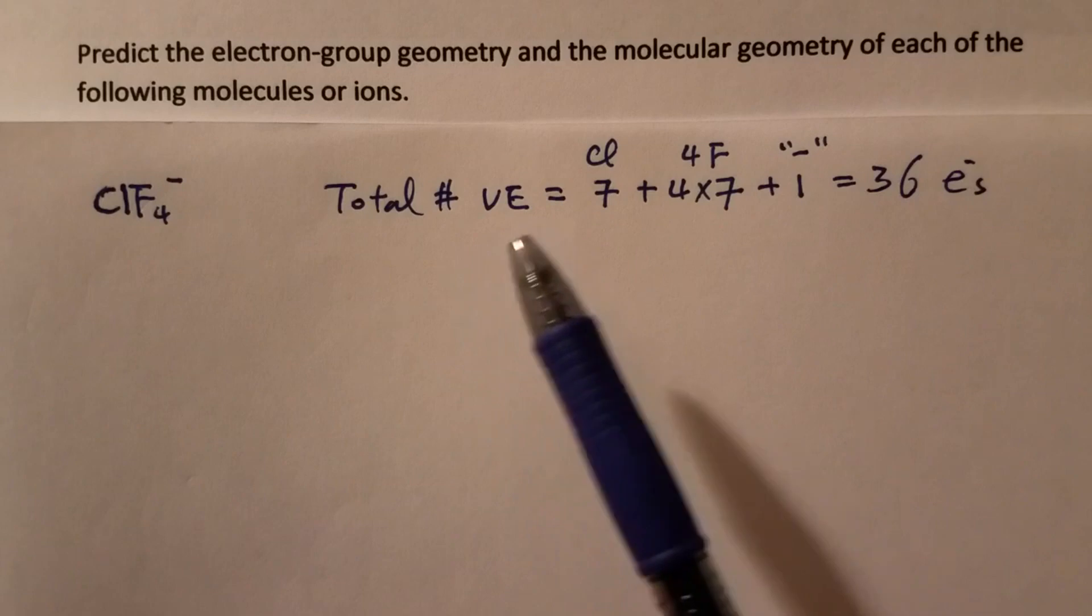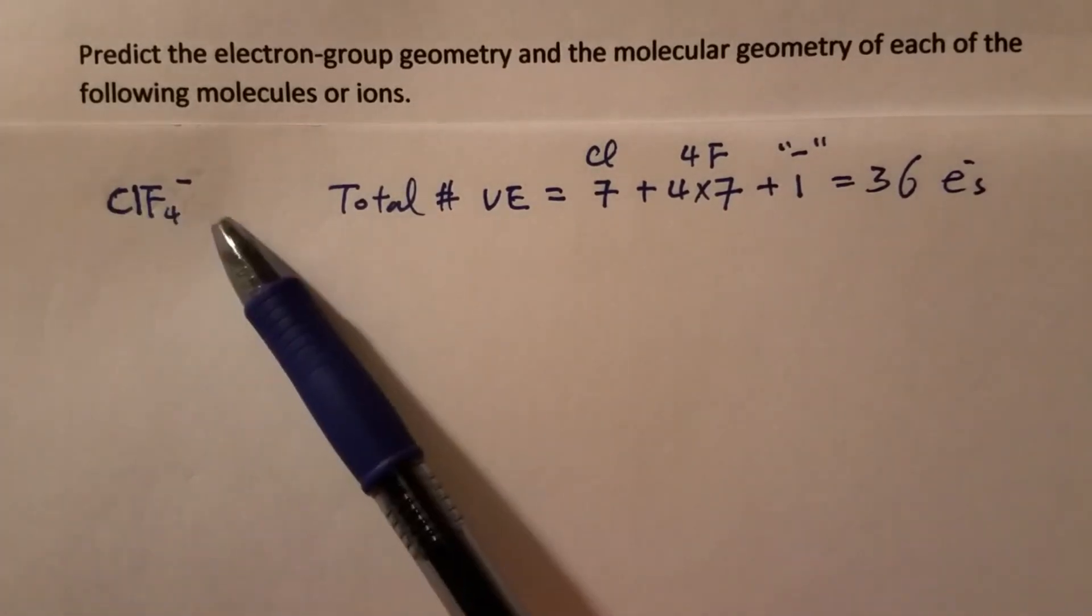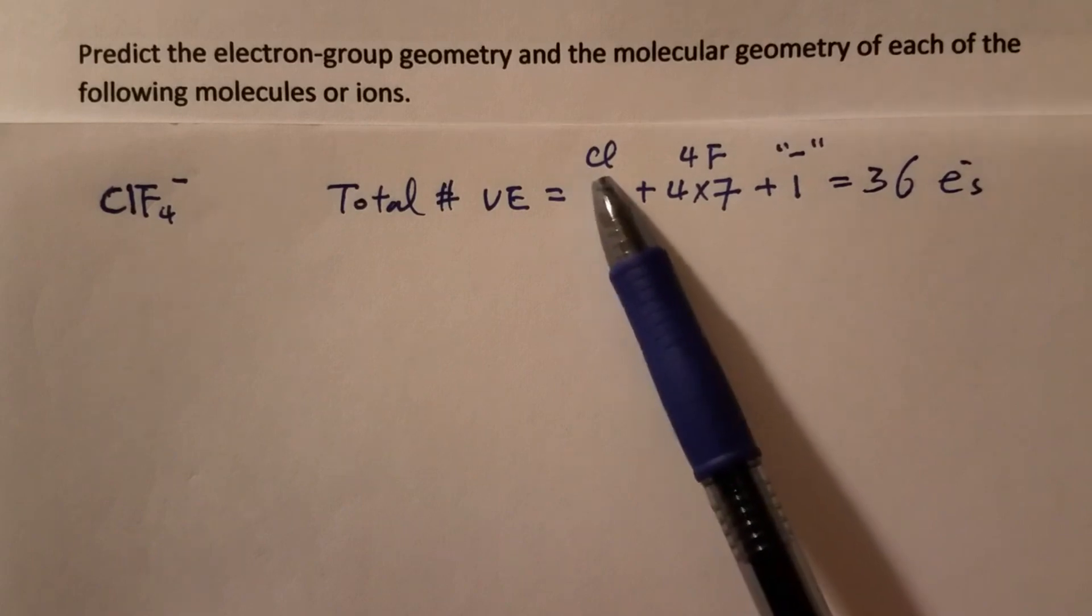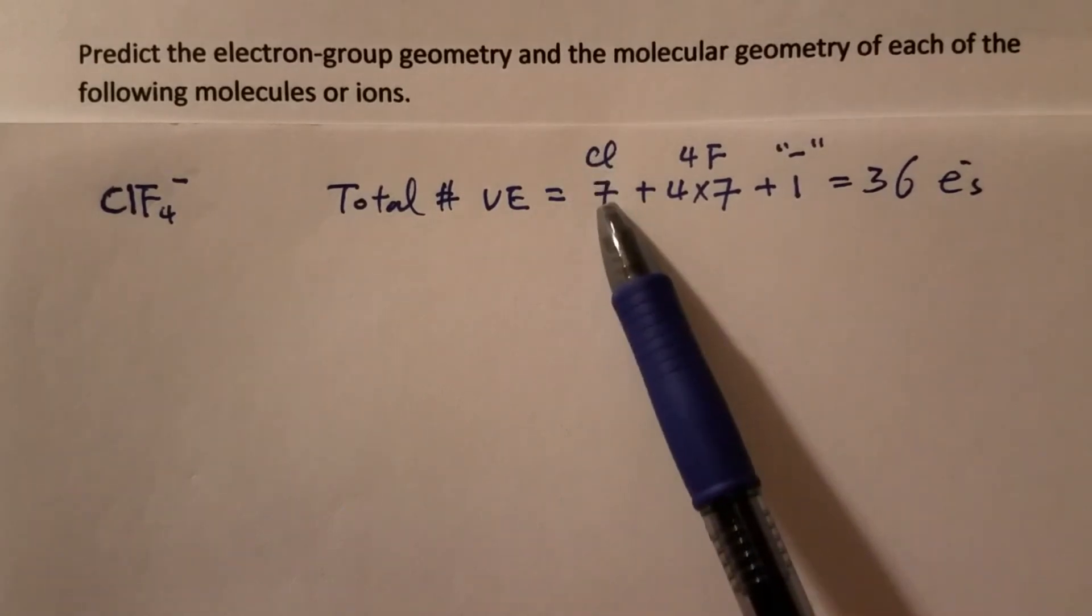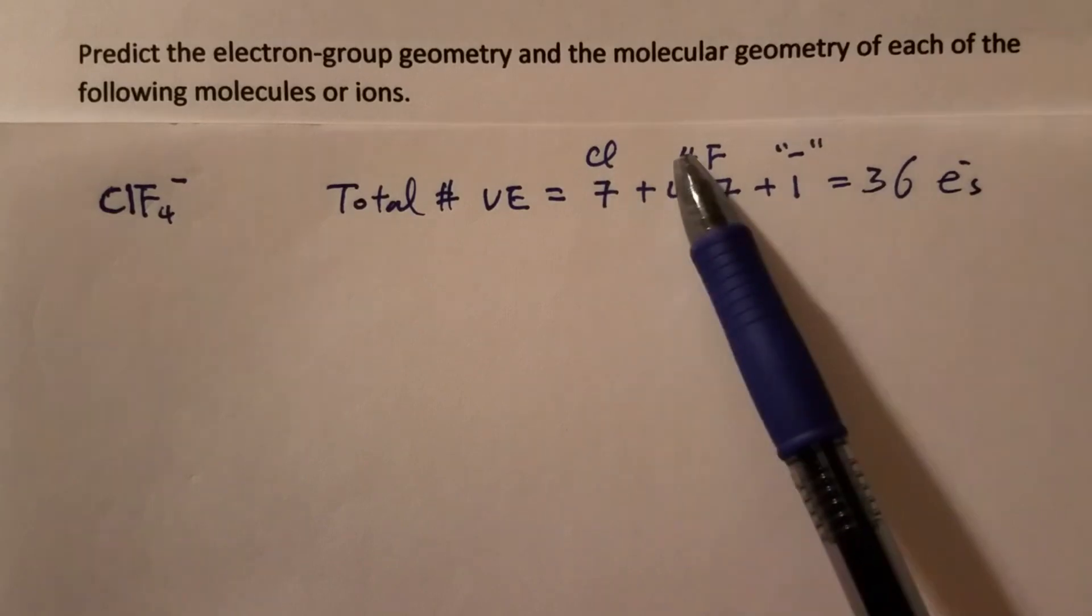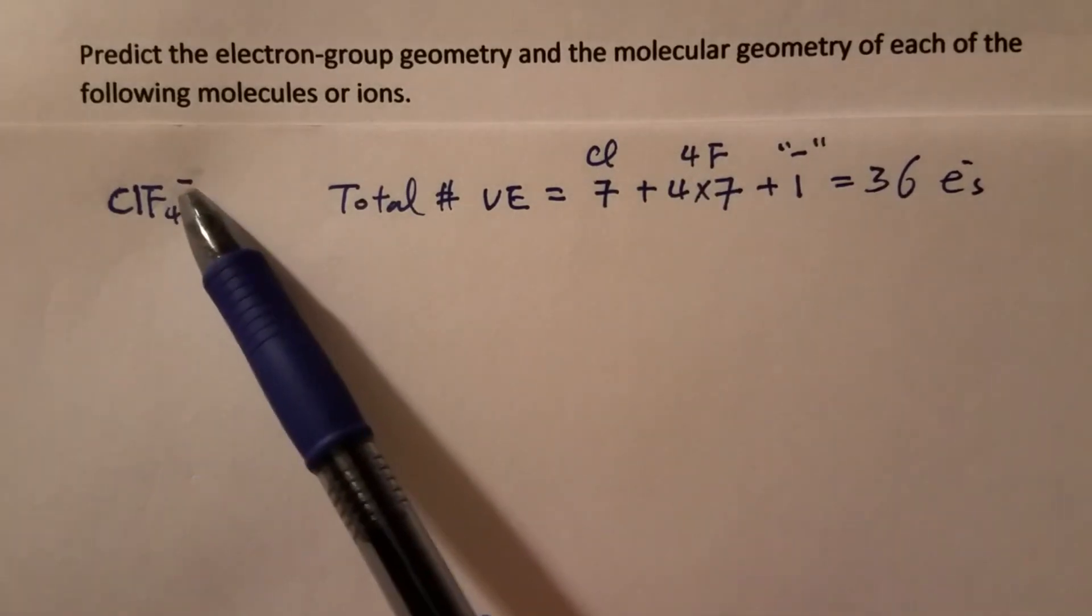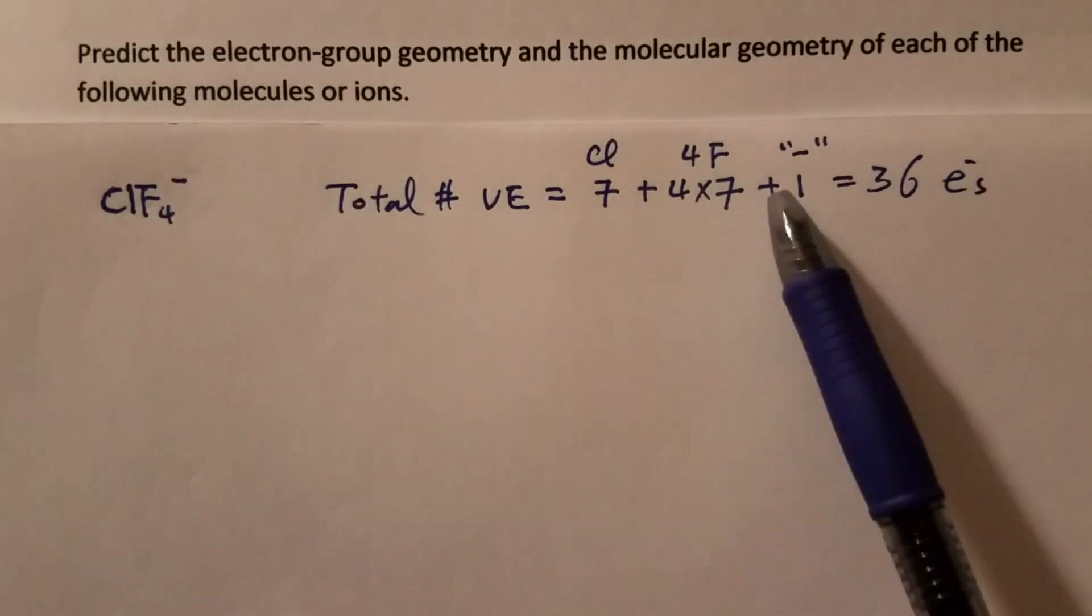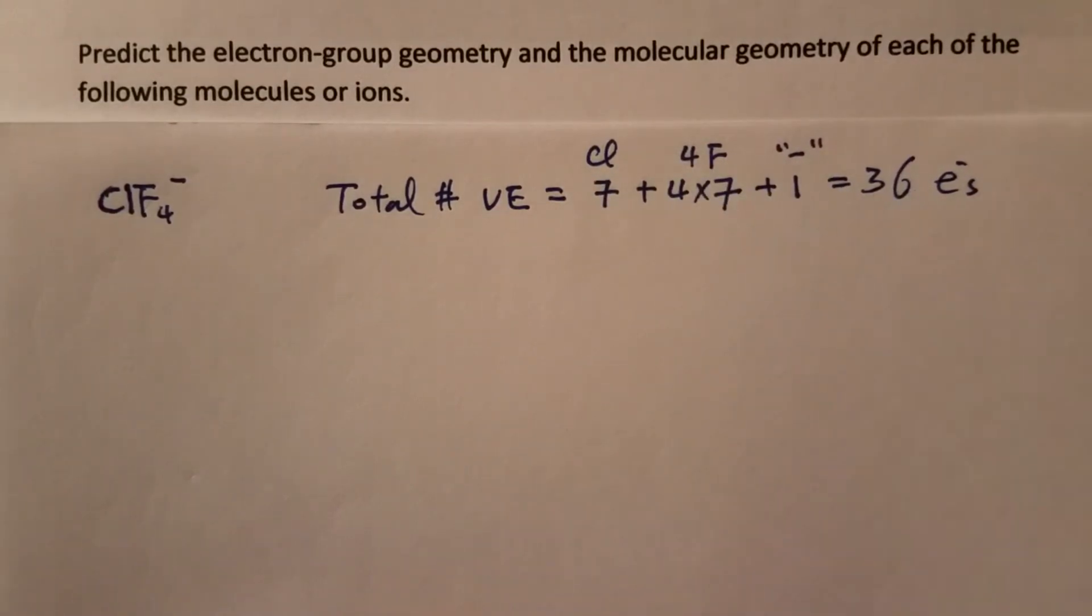First let's find out the total number of valence electrons in this ion. Both chlorine and fluorine are group 7A elements, so they carry seven valence electrons. One chlorine gives us one seven here, four fluorine gives us four times seven, then plus this negative charge means we gained one electron. So when you add those together, that's 36 electrons.